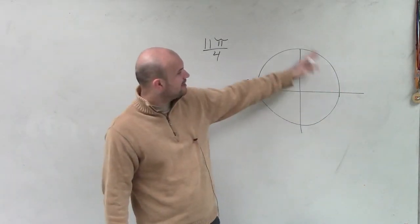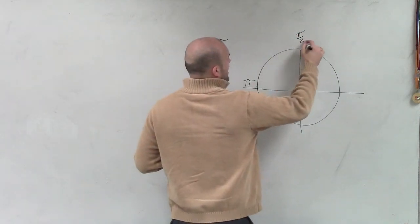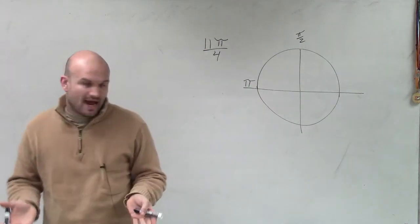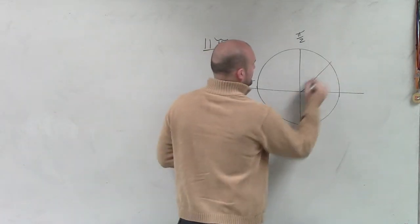If you can see, halfway around the circle is broken up into halves, which here would be π halves. Well, we don't want to break it up into halves. We want to break it up into fourths. So what I'm going to do is create two more lines here.